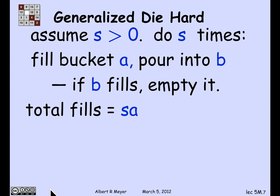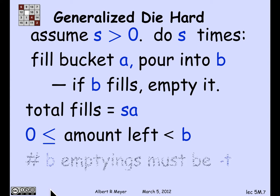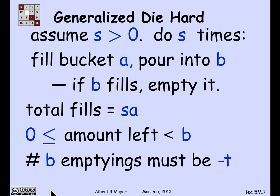When we do that, the total number of times we've filled bucket A is S times. So the total amount of water taken from the fountain is S times A. We pour it into B and then dump it, leaving only some amount in B that's less than B. The amount left after pouring in SA gallons and dumping out what won't fit is non-negative and less than B in bucket B. The number of emptyings of bucket B must be exactly T, which is why the amount of water left in bucket B is SA minus TB.